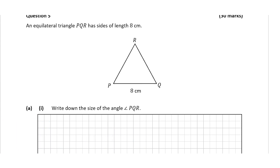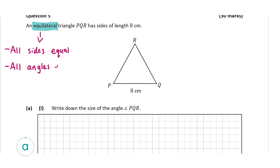So we're shown an equilateral triangle with sides of length 8cm. The first thing to note here is that in an equilateral triangle, all sides are equal and all the angles are also equal. So that means all sides will be the same length and all angles will be the same as each other. So both of the other sides are also going to be 8cm.